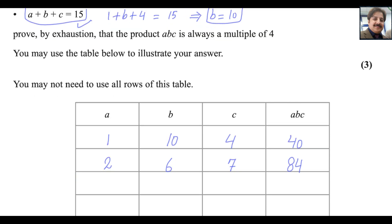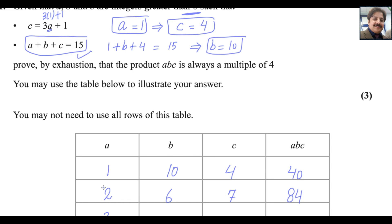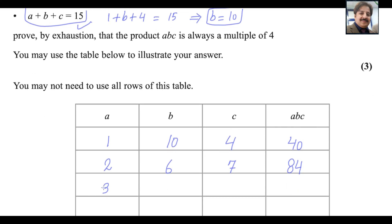Now choose another integer, let's say it is 3. If you replace 3 here in the equation, 3 multiply 3 is 9, 9 plus 1 is 10, so c will be 10. If c is 10, a is 3, b will be 2 because the sum of these three numbers should be 15. Multiply them together you get answer 60.